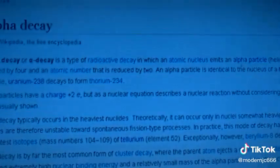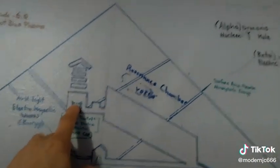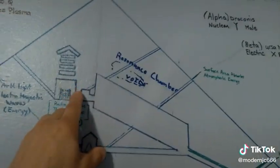You have alpha decay, which is your nuclear energy, and beta decay, which is your electrical. So you have your nuclear, Alpha Draconis, and your beta, Ursa Minor, electrical.